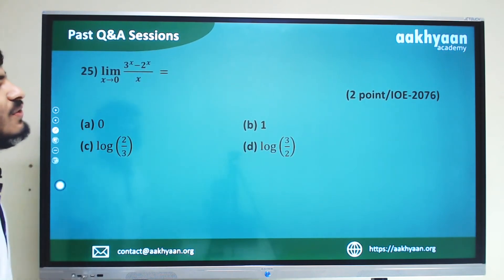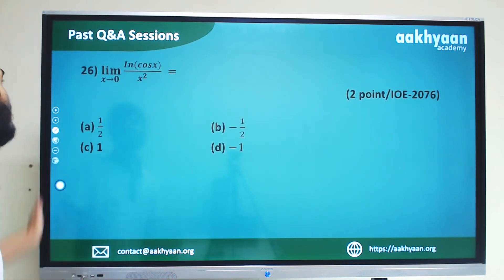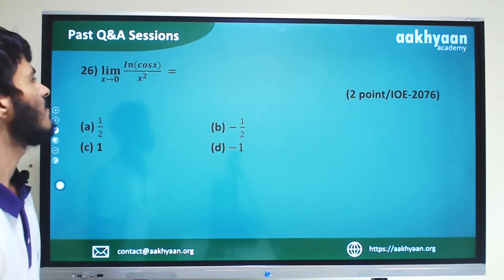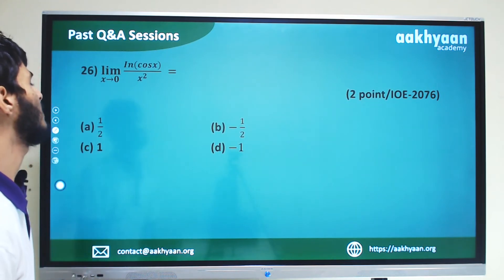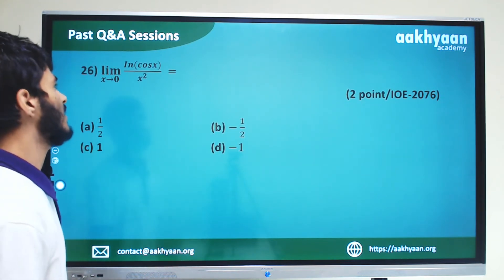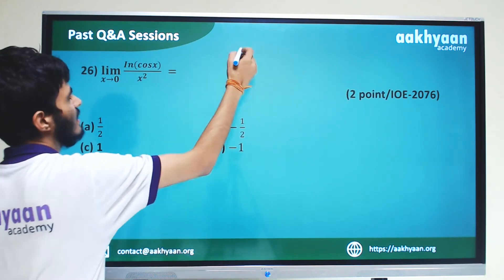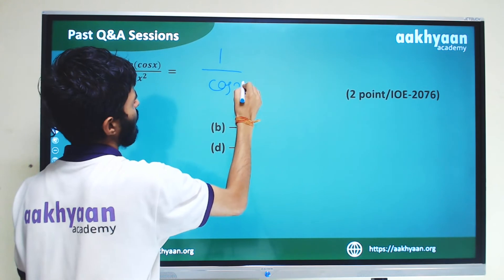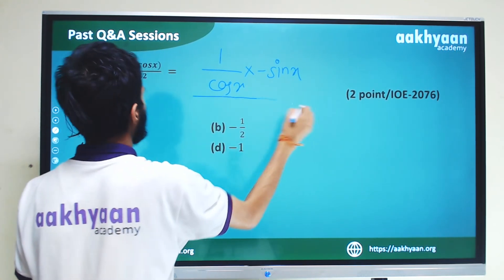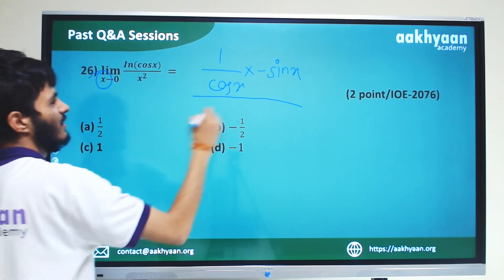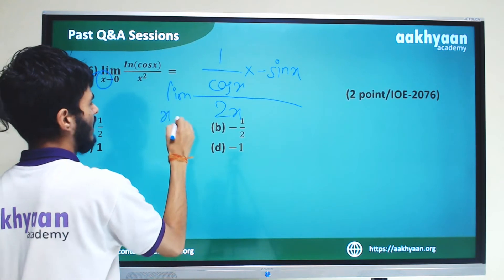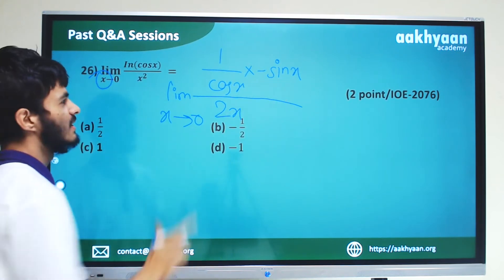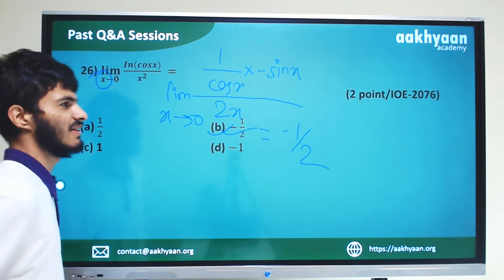In the 26th number problem, limit x tends to 0 of ln cos x by x squared. Substituting gives 0 by 0 form. Applying L'Hôpital's rule, the derivative of ln cos x is negative sin x over cos x, and derivative of x squared is 2x. Taking the limit x tends to 0, we get minus sin x over cos x divided by 2x, which gives minus 1 by 2 as x tends to 0. So these are the correct answers.